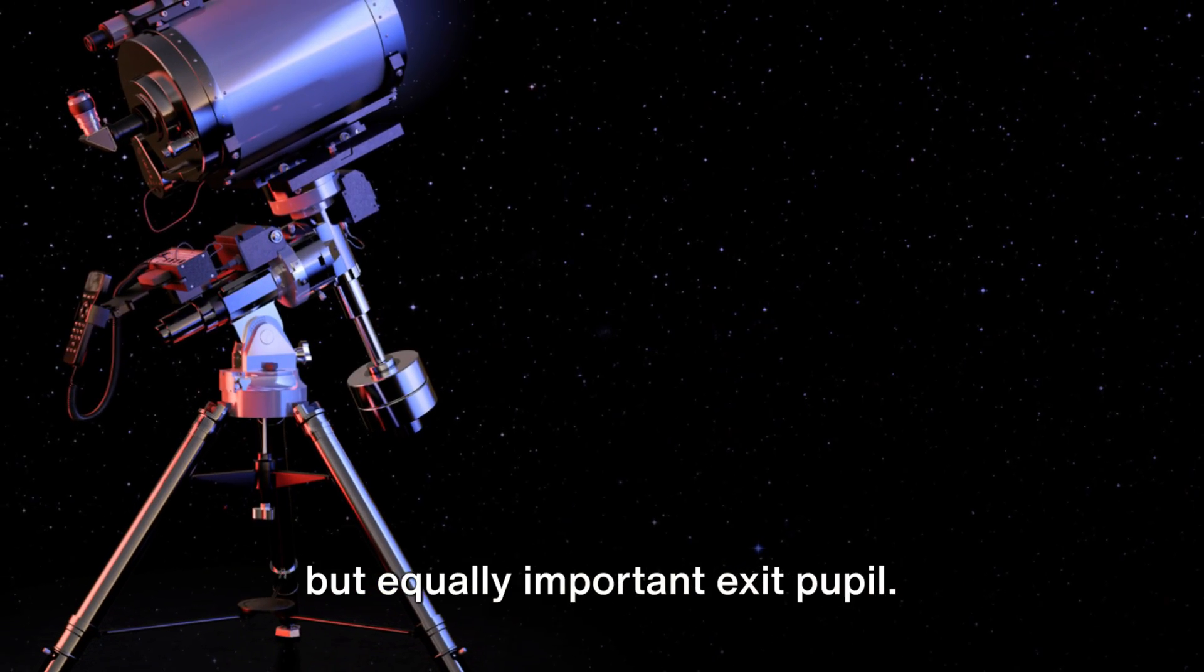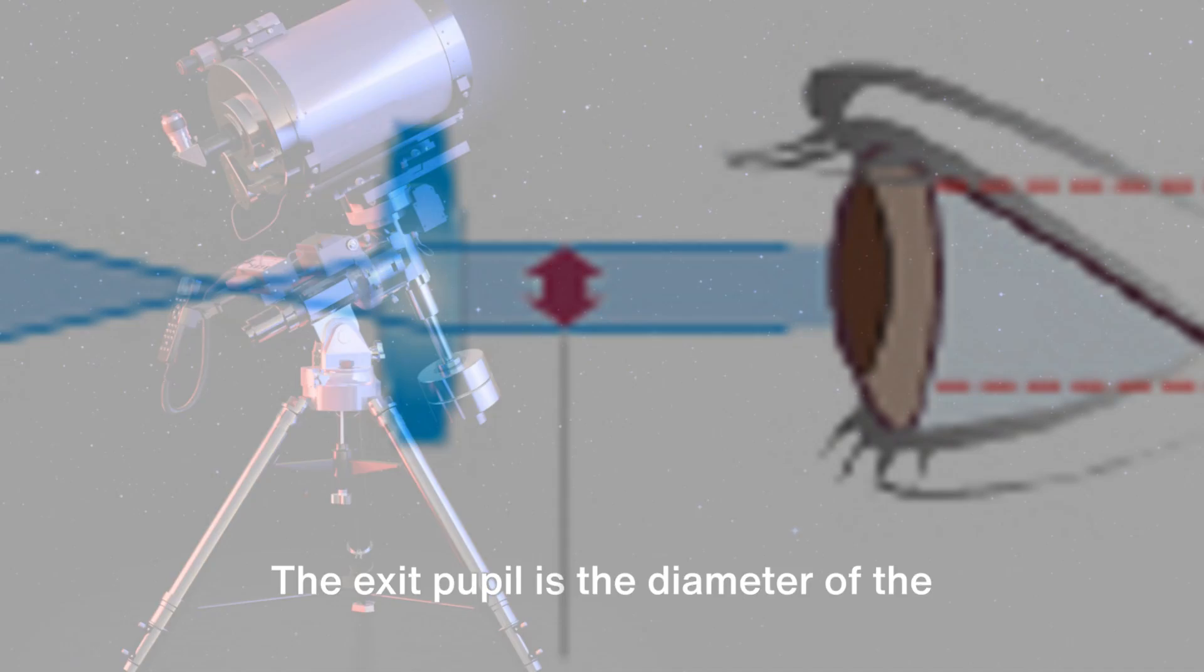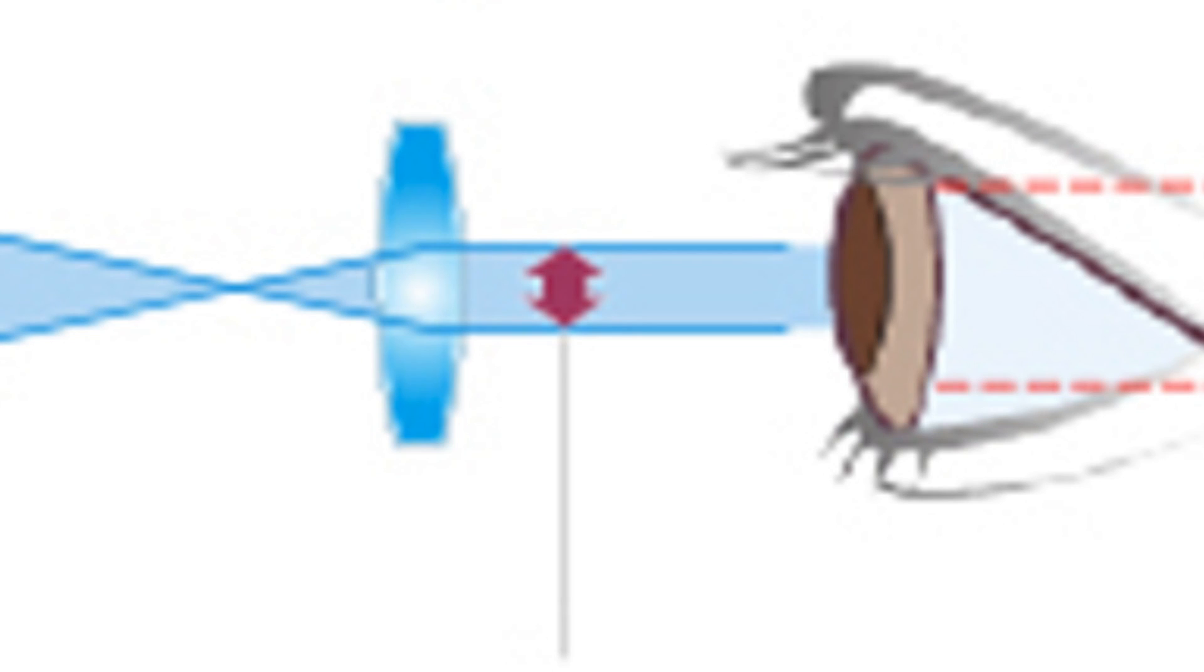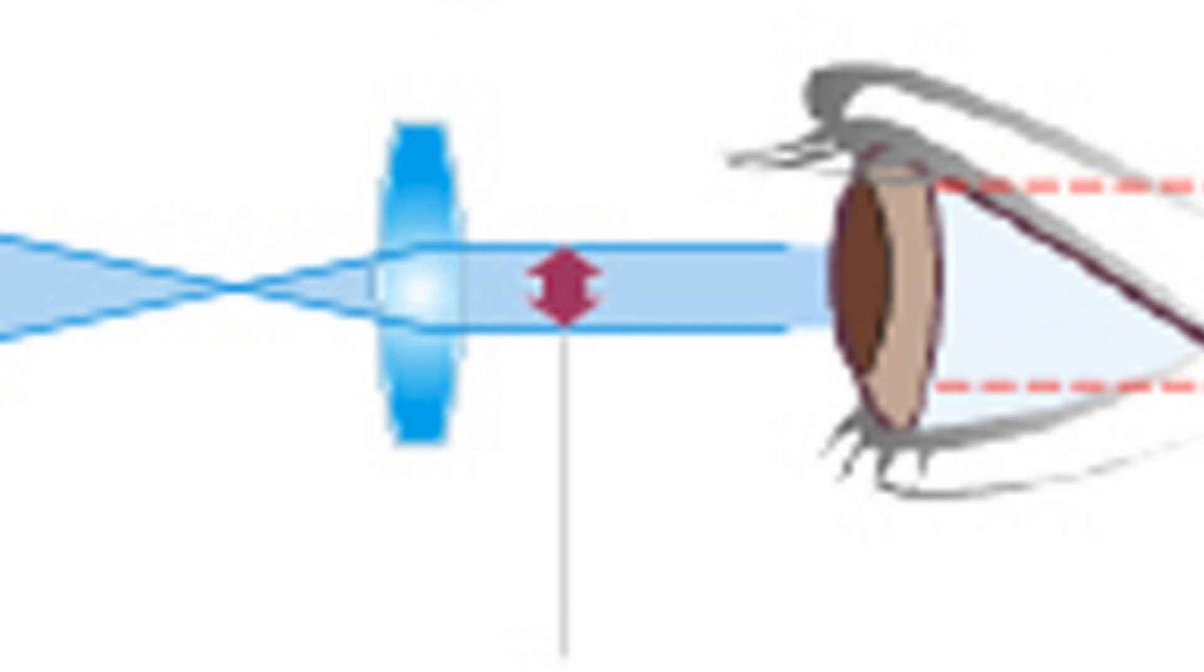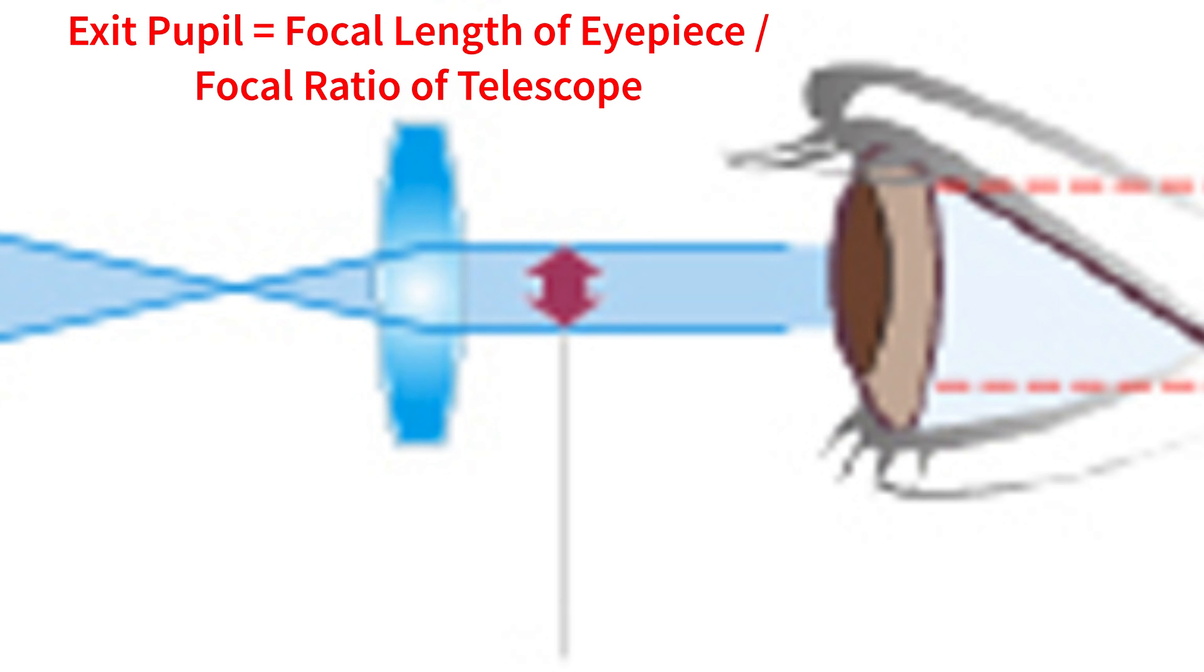Next, let's delve into the lesser known but equally important exit pupil. The exit pupil is the diameter of the beam of light leaving the eye lens and entering your eye. This can be calculated either by dividing the diameter of the objective lens by the magnification used, or by dividing the eyepiece focal length by the telescope's focal ratio.